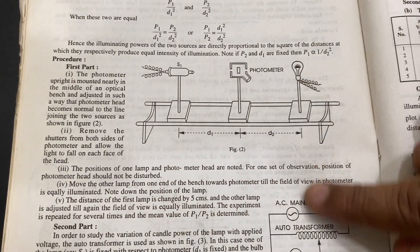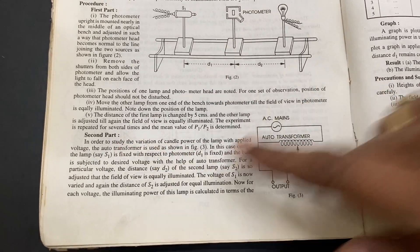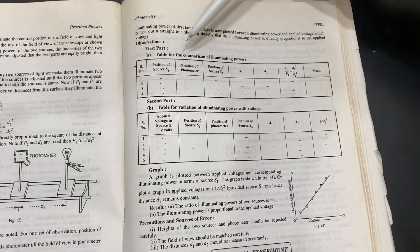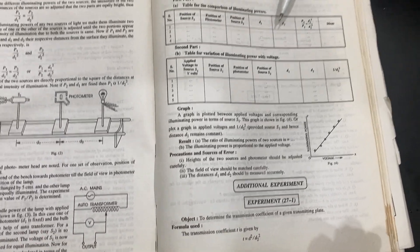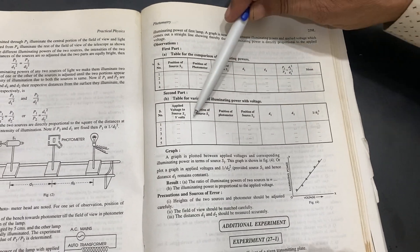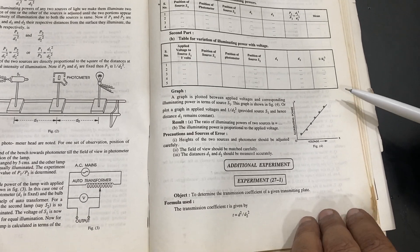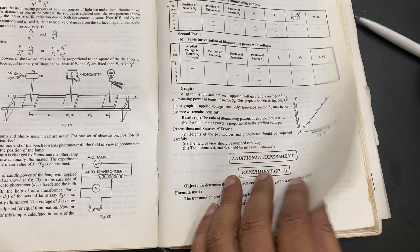Now this is variable lights, two sources, Lummer-Brodhun photometer center part, second part, and then the tables are there visible. You can tabulate how much is source one, source two distance, and the illumination diameter. And then you can plot the distance and graph. Do the experiment as per your books.